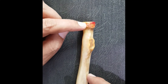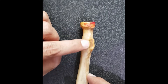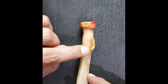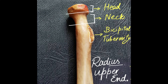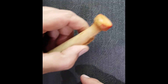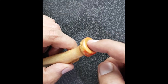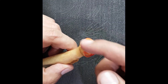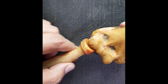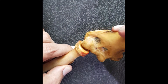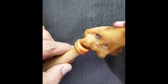The upper end of the radius has got three parts: it has got a head, it has got a neck, and then it has got a rough elevation known as the radial tuberosity, located just below the neck. The head of the radius is disc-shaped. It has got a superior aspect and a circumference. The superior aspect will articulate with the capitulum of the humerus bone to form the elbow joint, where we can perform flexion and extension movements.